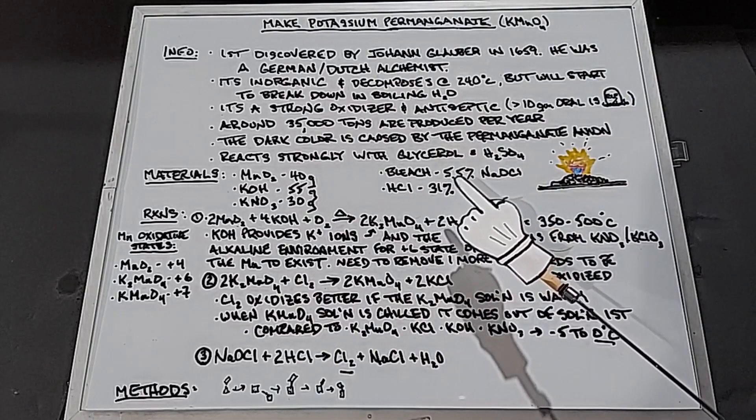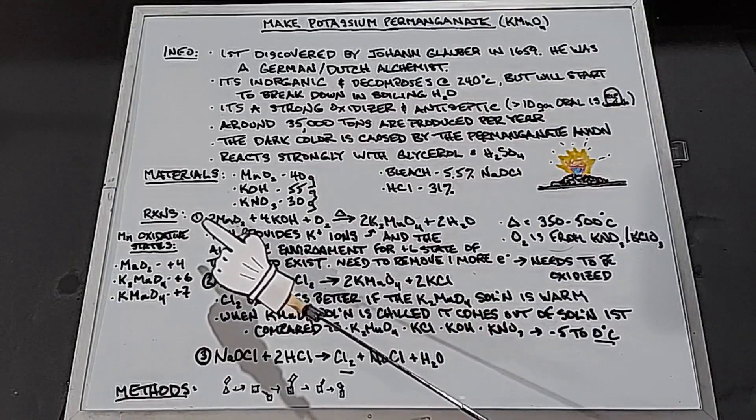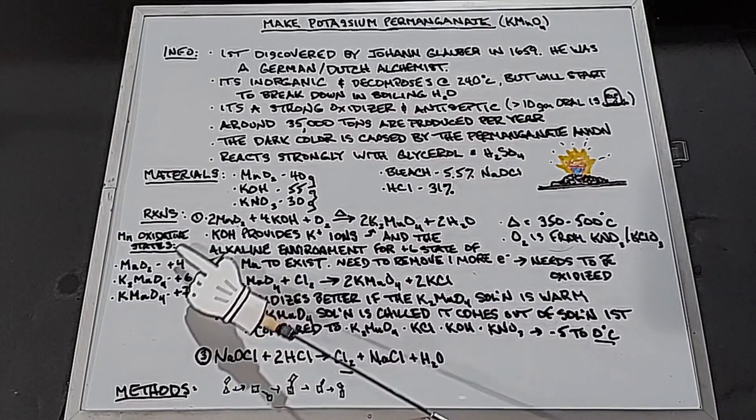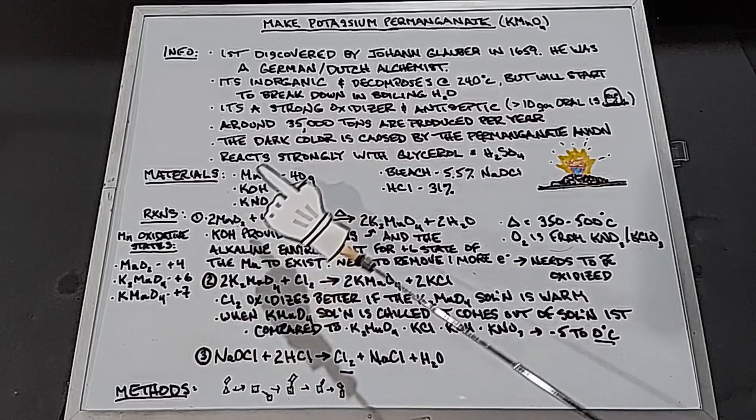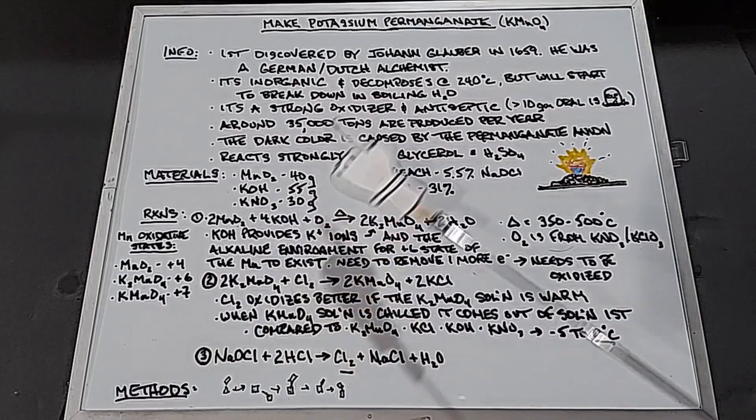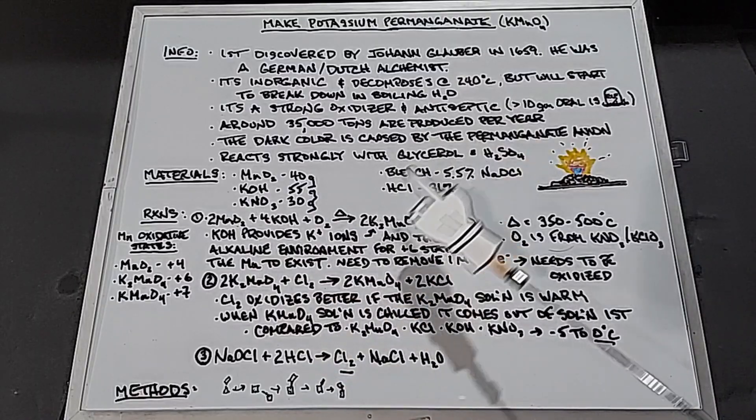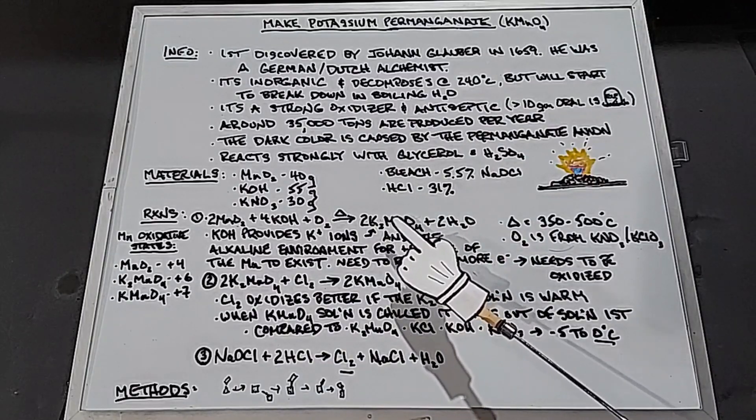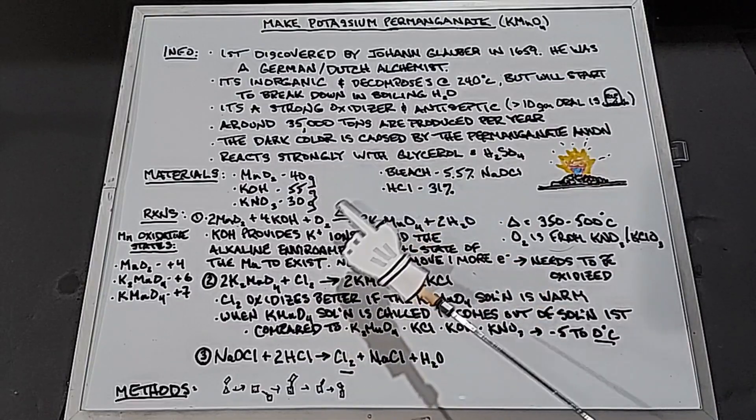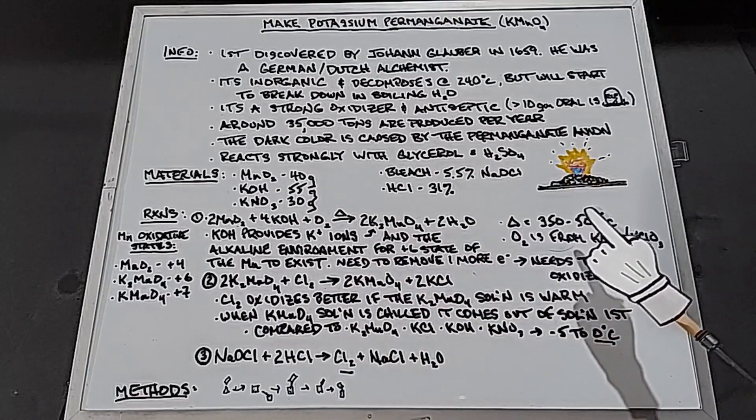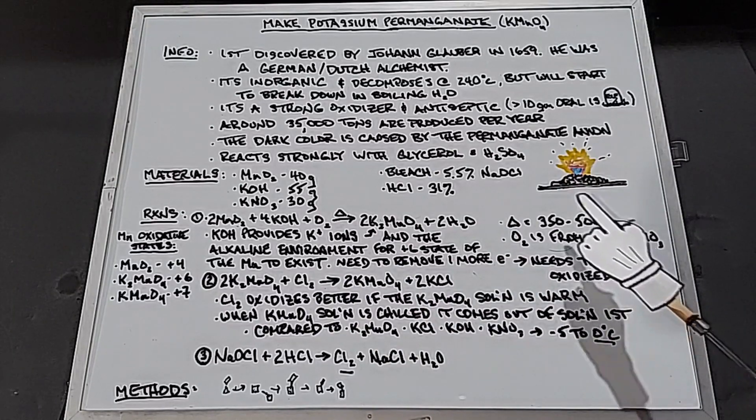I'm going to go over a couple of reactions here because they are important as to how this whole procedure progresses. The first one is two manganese dioxide plus four potassium hydroxide plus oxygen, which is coming from the potassium nitrate, yields two potassium manganates and two waters. This triangle means heat was applied, typically between 350 and 500 degrees Celsius.